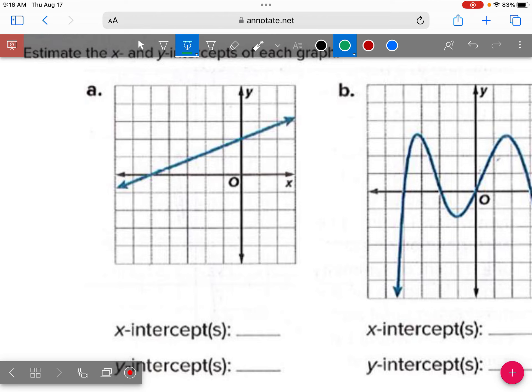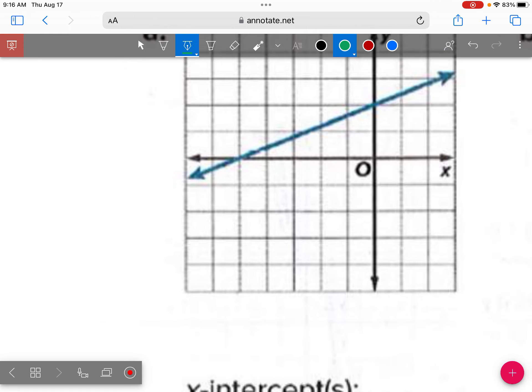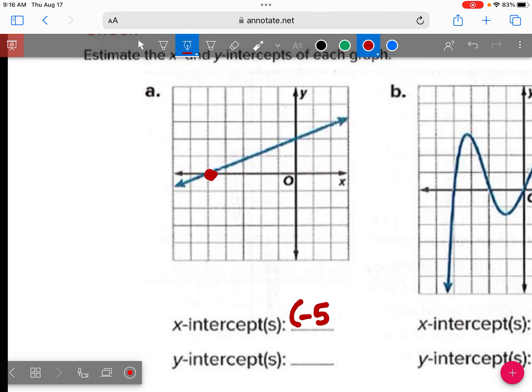So what did you say for your x-intercept? So it looks like if we're counting backwards, this would be negative 1, negative 2, negative 3, negative 4, negative 5. Who said negative 5? Raise your hand if you got negative 5. All right. So you could say negative 5, 0, or you could also just put negative 5. And then your y-intercept, where does it look like our y-intercept is located? Zero comma 2. Good job.